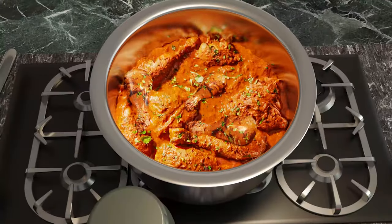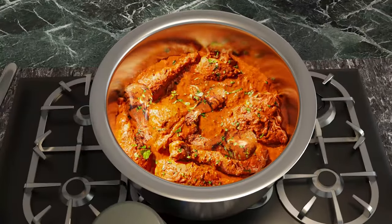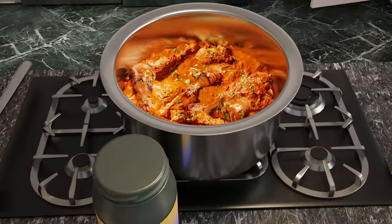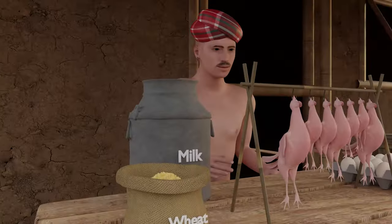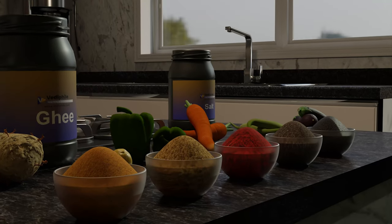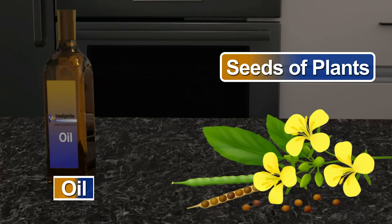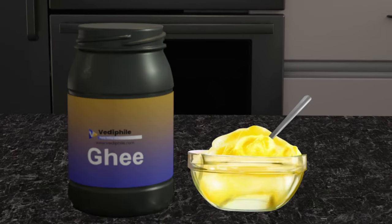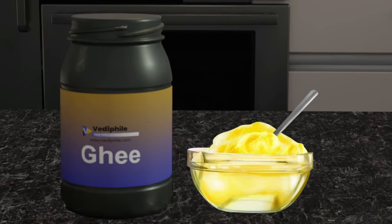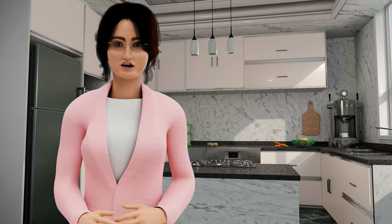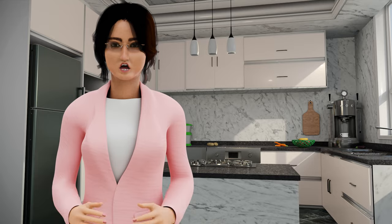So ye the chicken ke ingredients. In which chicken was brought from animals, and spices and oil are taken from plants, and ghee is taken from animals.